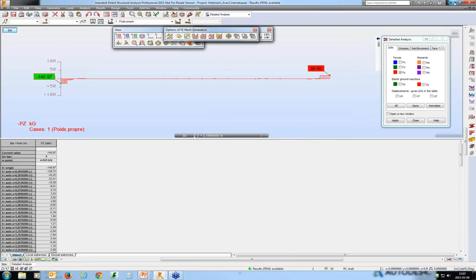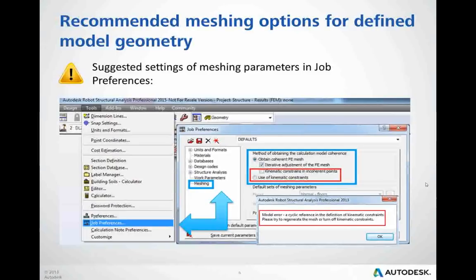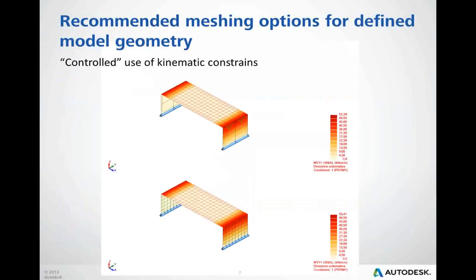This was an uncontrolled situation where you should not use kinematic constraints — the mesh was generated without focusing on a specific area. By contrast, here is a controlled use of kinematic constraints, where I deliberately use a larger element size for walls and smaller for floors, and there is practically no difference in the obtained results. The message is: it is okay to use kinematic constraints, but you should decide where you want to use them rather than allowing the program to use them by default. And if you do, check the results carefully.